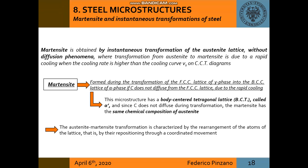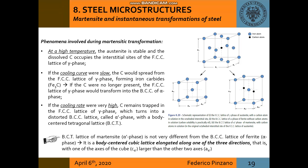Martensite is obtained by instantaneous transformation of the austenite lattice due to rapid cooling, without diffusion phenomena. It is formed during the transformation of the FCC lattice of gamma phase into the BCC lattice of alpha phase, and the microstructure has a body-centered tetragonal lattice called alpha-prime, with the same chemical composition as austenite. At high temperature, austenite is stable and dissolved carbon occupies the interstitial sites of the FCC lattice of gamma phase. In case of high cooling rates, carbon remains trapped as the FCC lattice turns into the BCT lattice of martensite — a body-centered cubic lattice elongated along one direction, with one axis of the cube larger than the other two.